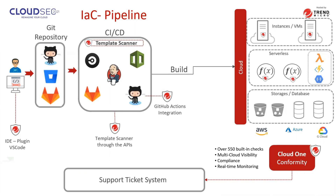So what we are proposing at Trend Micro — we have a couple of solutions to help customers with. For the infrastructure as code pipeline, starting with the DevOps part, while building your code in real time — a key point I always mention to customers — is how you can achieve best practices and be able to write and execute your IAC file and code in a secure manner in real time.